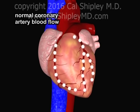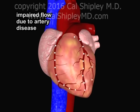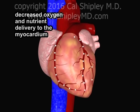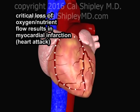Myocardial infarction, also known as heart attack, occurs due to disease in coronary arteries which impairs blood flow to the heart muscle, also known as the myocardium. Impaired coronary artery blood flow results in decreased delivery of oxygen and nutrients to the myocardium. If the loss of oxygen and nutrient flow reaches critical levels, a myocardial infarction occurs.